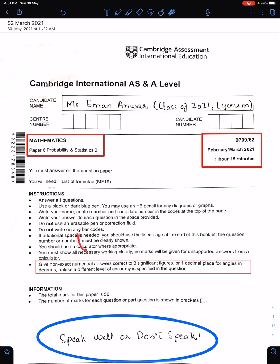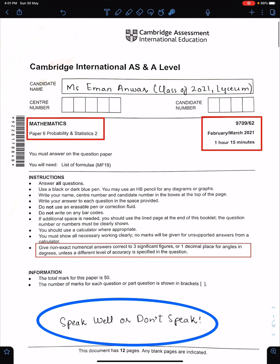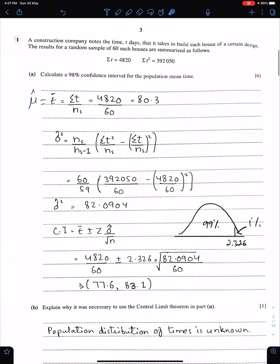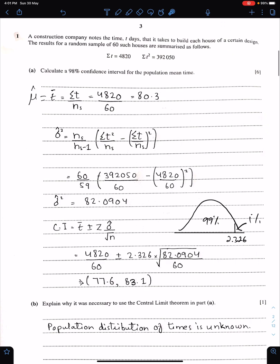All these instructions are very important, especially this last one: Give non-exact numerical answers correct to three significant figures. Must follow all these instructions. An important advice: Speak well or don't speak. Two important tips to solve the paper in a good way: Number 1, read questions carefully. Number 2, avoid careless mistakes.